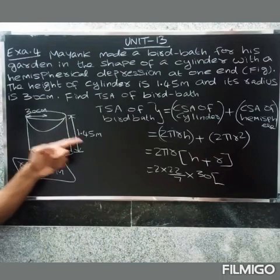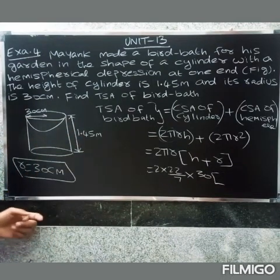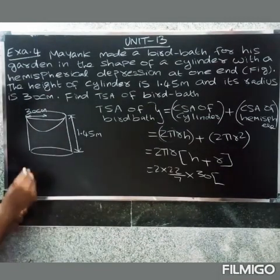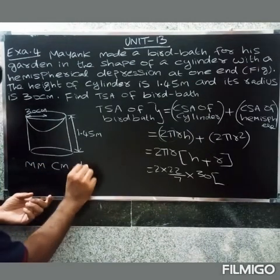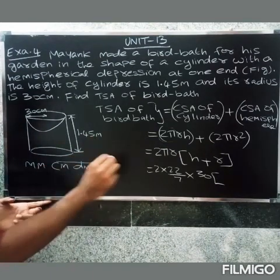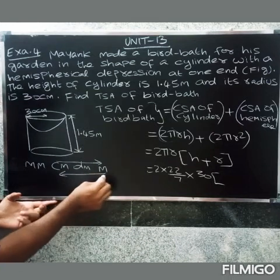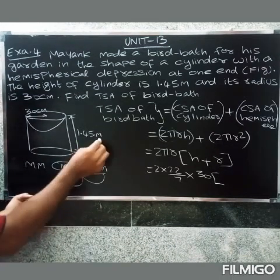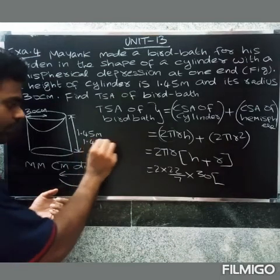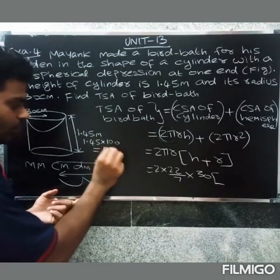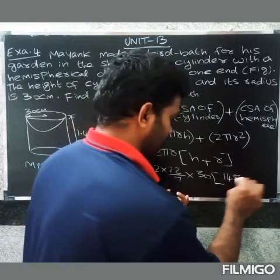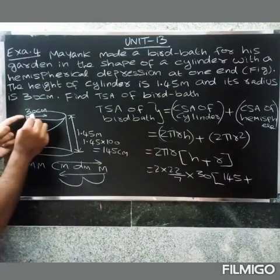Times height of cylinder 1.45 meters - but we need to convert to centimeters. Meter to centimeter: multiply by 100. So 1.45 × 100 equals 145 centimeters. So it's 145 centimeters plus radius 30 again.